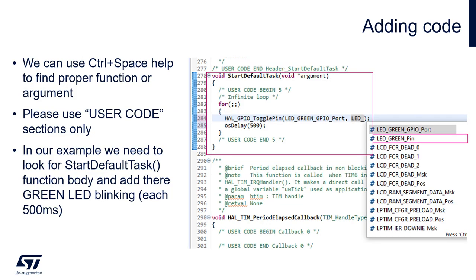Let's have a look at the generated code. We will start from main.c. We can use Ctrl+Space to find the proper function or argument we would like to use — just start typing and press Ctrl+Space at any moment to display a list of possible components. Be careful and use only user code sections for your code; otherwise your code will be removed during the next code generation. In our example we need to look for the startDefaultTask function body. This is the default task generated once we selected FreeRTOS. Within this function's endless loop we need to add code to toggle LED_green each 500ms using HAL_GPIO_TogglePin with first argument LED_green_GPIO_Port.